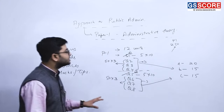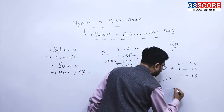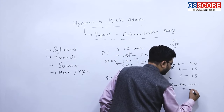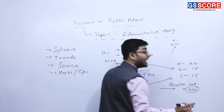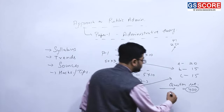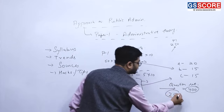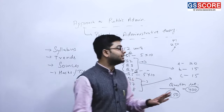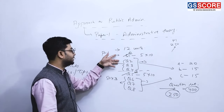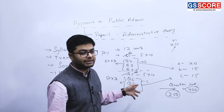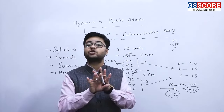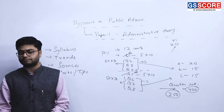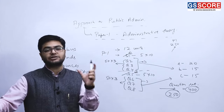The entire question set is of 400 marks, out of which we need to write answers for 250 marks. The questions are largely intermingled — it is not that the first six units appear in Section A and the other six in Section B. The questions are mixed across sections.